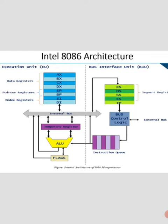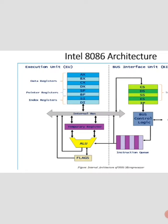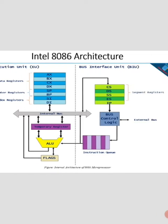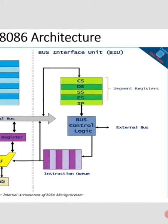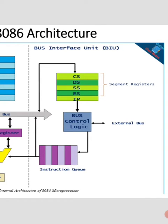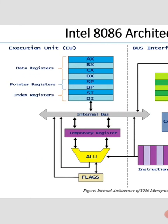The BIU fetches instructions, receives them, and places them in the instruction queue. The Execution Unit continuously executes them until the queue becomes empty. Such processing is known as parallel processing. Essentially, the BIU fetches instructions and gives them to the Execution Unit, which continuously executes them until empty.